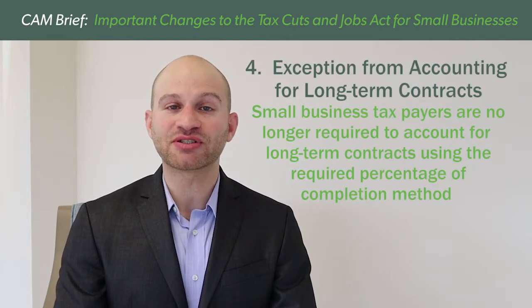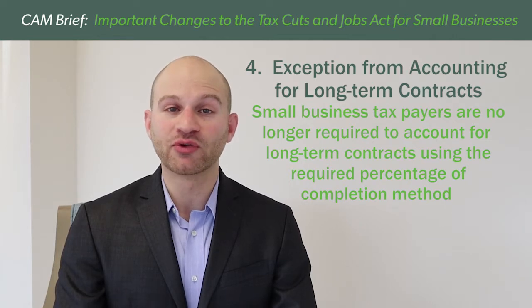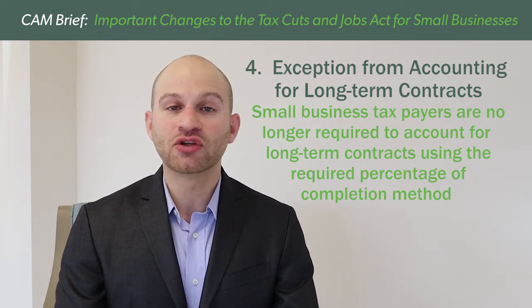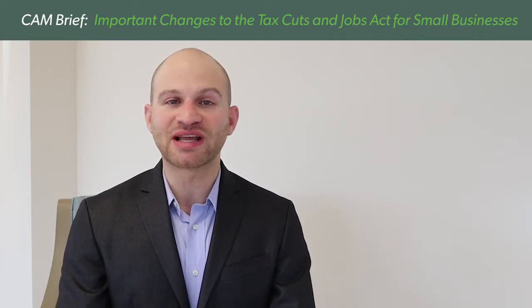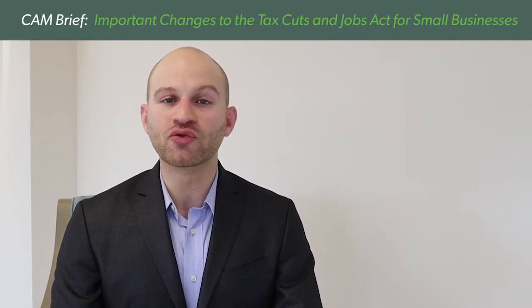The fourth and final change is the exception from accounting for long-term contracts under the required percentage of completion method, or for Unicap for home construction contracts. Small business taxpayers are no longer required to account for long-term contracts using the required percentage of completion method and may use any other acceptable long-term contract method. Other methods, such as the completed contract method, often provide businesses a longer deferral on the recognition of income from these contracts. Although there is no current year tax deduction available for this change, the benefit is a prospective one where any new contracts can be recognized on a method other than the percentage of completion method.